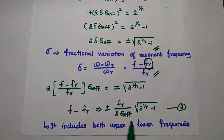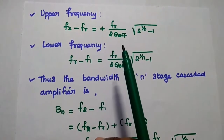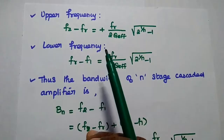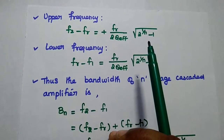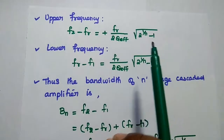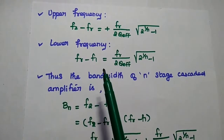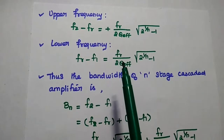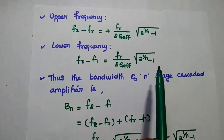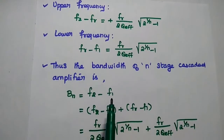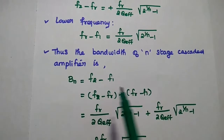Equation 3 includes both upper and lower frequency ranges. The upper frequency gives f_2 minus f_r equals f_r divided by 2·Q_f times √(2^(1/n) minus 1). Similarly, the lower frequency gives f_r minus f_1 equals f_r divided by 2·Q_f times √(2^(1/n) minus 1). The bandwidth is f_2 minus f_1.